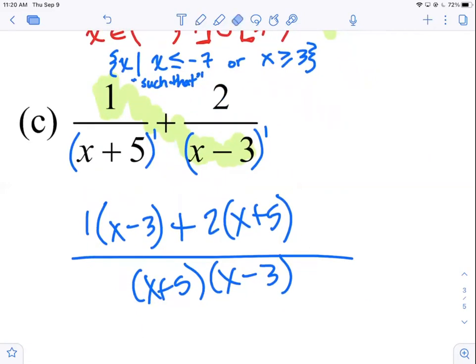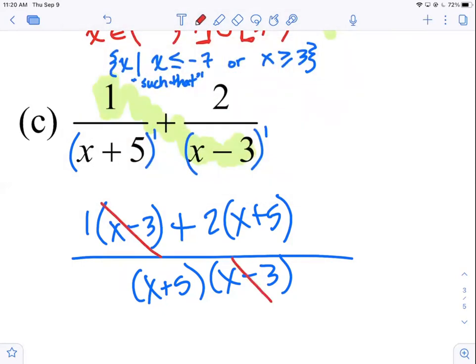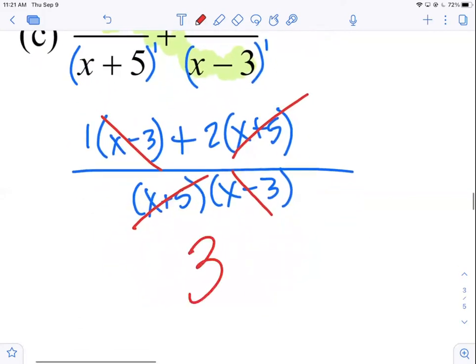So, anytime we have co-prime factors, that's a good candidate for the crisscross applesauce butterfly multiply method. Does it matter if we start in the top left or top right? Big time, yes. Some people are doing this, and they're starting in the top right. And if it's subtraction, you get the wrong answer. You got to start in the top left, just like you're reading a page in a book. So, here we go. Product down the first diagonal, 1 times x minus 3.